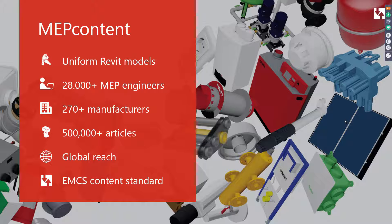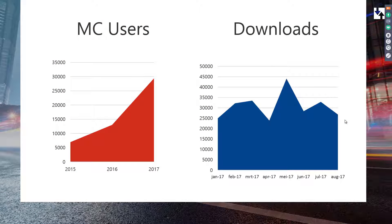There are a lot of demands nowadays in terms of quality, and we think it's really important that MEP engineers work with content which can be used all over the BIM cycle. This is why we have our EMCS content standard, which describes exactly what content should look like, what data it should have, what parameters and what type of detail, to make sure it matches BIM standards all over the world. Looking at our increasing number of engineers on our platform, BIM is really taking over the world.